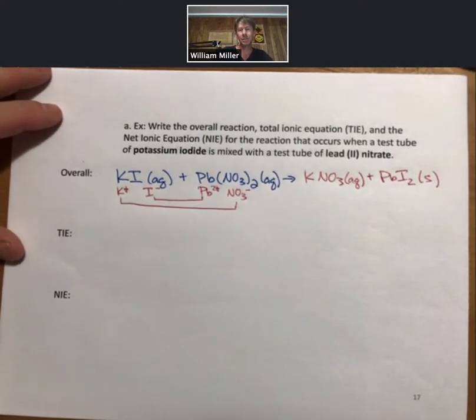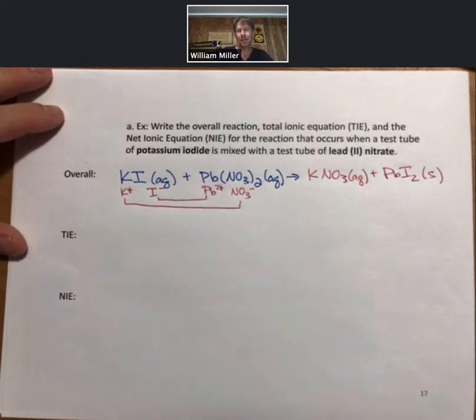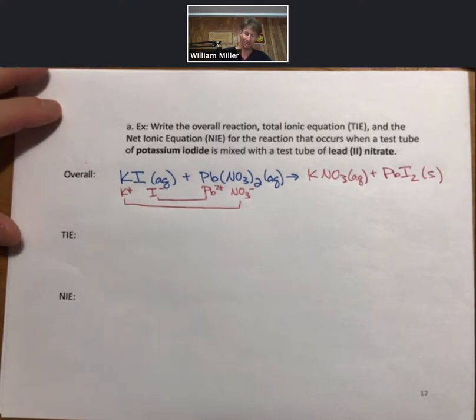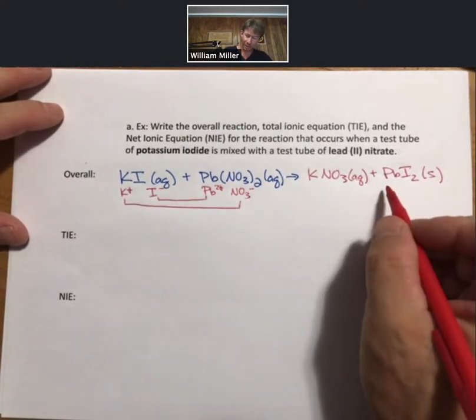That means that the other one must be a solid. One of our rules says that most halide compounds are soluble, except for when they contain silver ion, mercury one ion, or lead two ions. So this is a case where we have a solid there. This is the overall reaction.